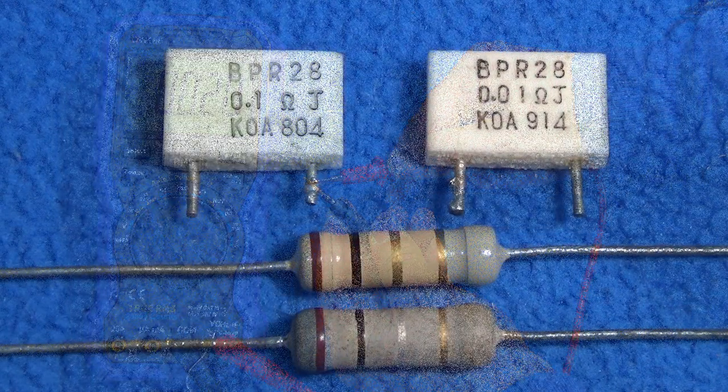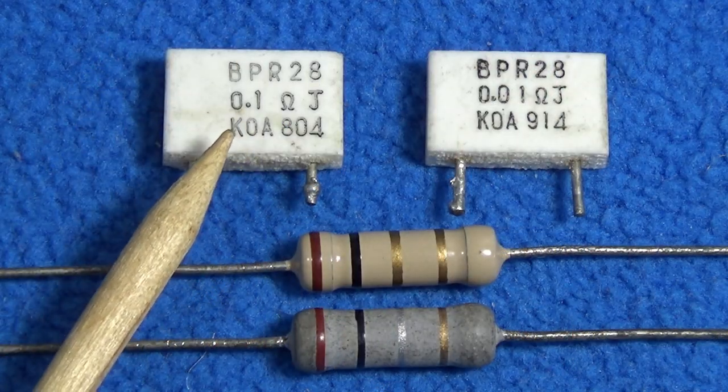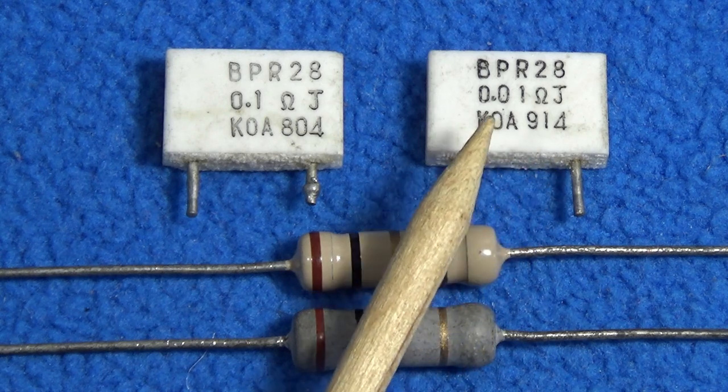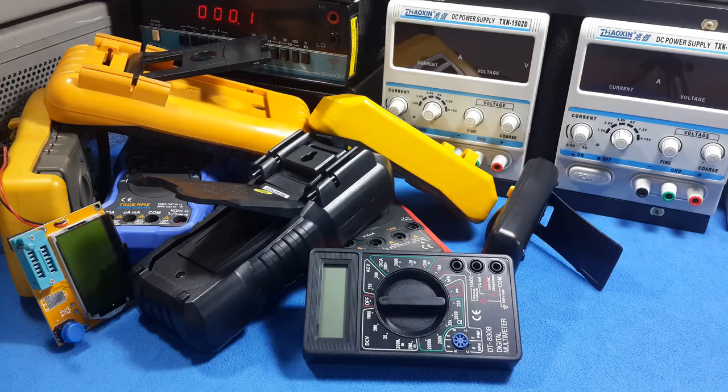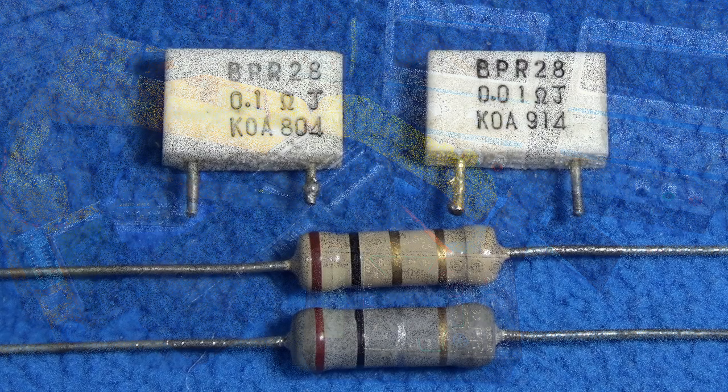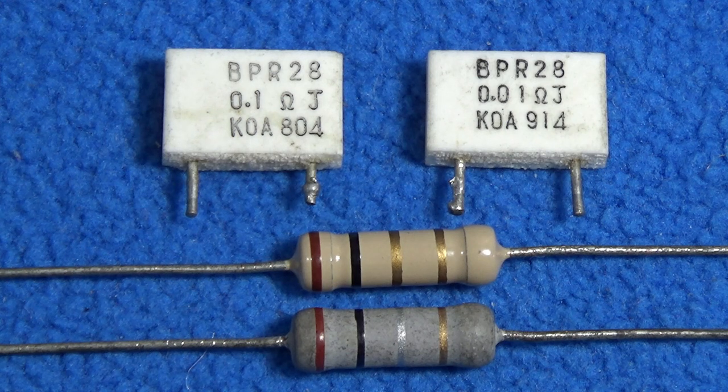Now, if we try to go from 0.1 ohm to 0.01 ohm, forget it. No one of our digital multimeters could be good enough for that. So, we have to go for plan B.